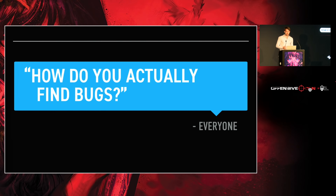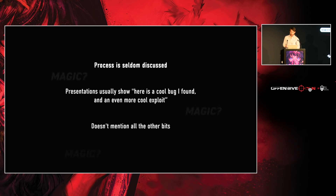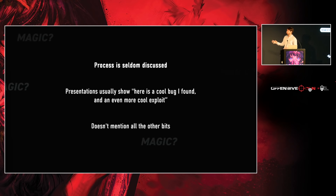Throughout my career, the thing that people most often have asked me is how do you actually find bugs in major software? We know what an integer overflow is, we know what a use-after-free is, et cetera. How do you actually apply that to doing real vulnerability research? It's an interesting question because this process doesn't actually get discussed very often. Usually you see presentations where they talk about a really cool vulnerability, a really cool exploit, or perhaps a tool related to those, and it doesn't really talk about the process of what it's like to be a vulnerability researcher.